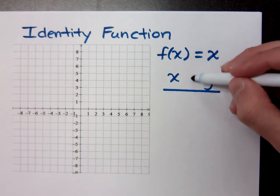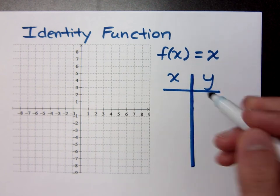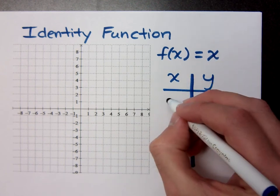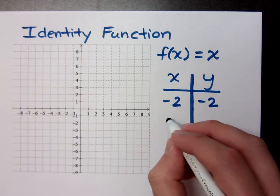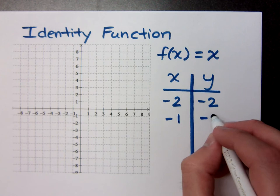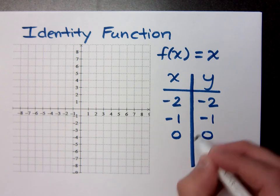If you were to make a t-table of values, you would plug in something like negative 2. The identity function says you get the same thing. You plug in negative 1, you get negative 1. You plug in 0, you get 0, and so on.